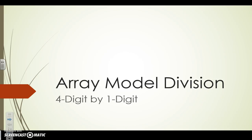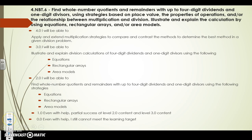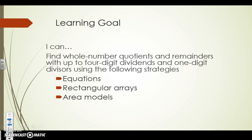We're going to continue our practice with Array Model Division, this time with four-digit by one-digit problems. Here is our standard and our learning scale, which leads us to our learning goal: I can find a whole number of quotients and remainders with up to four-digit dividends and one-digit divisors using the following strategies — equation, rectangular arrays, and area models — specifically for right now using rectangular arrays.